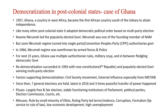लेकिन Nkrumah's regime turned into single party और democracy को त्याग दिया। 1966 में Nkrumah's regime was overthrown by armed forces and police। उसके बाद पच्चीस साल तक violence और political upheaval चलता रहा — Ghana saw multiple authoritarian rule, military coups, and in between fledgling democracy। Re-democratization succeeded ultimately in 1993 with new constitution, जो कि चौथा constitution था इसलिए Fourth Republic कहते हैं, and popularly elected government through multi-party election। तब से वहाँ stable democracy है — सात बार general election हो चुका है, तीन बार incumbent हार चुकी है और opposition को peaceful power transfer हो चुका है।